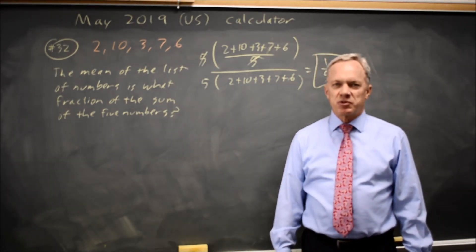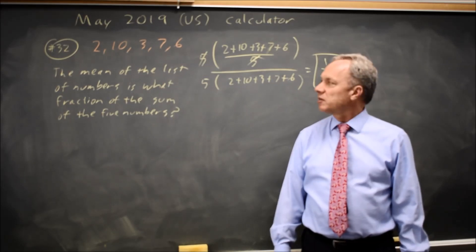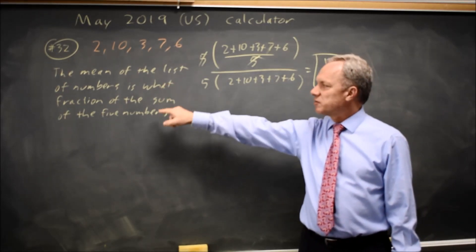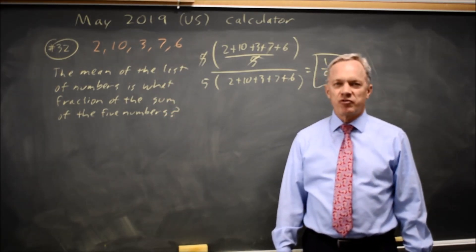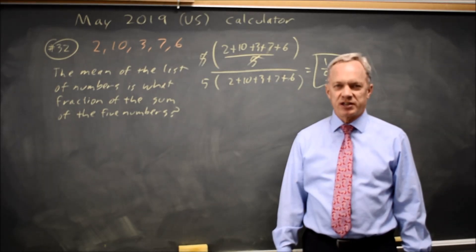The mean is the sum divided by the number of values you have, so the mean is 1 fifth the sum when you have 5 values.